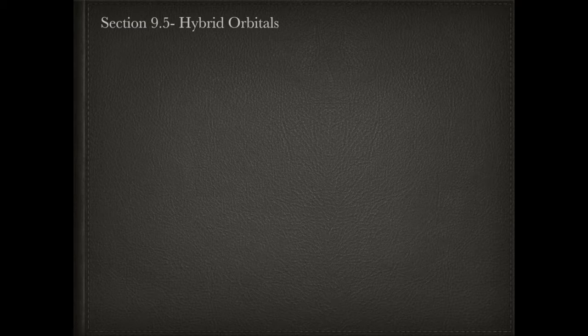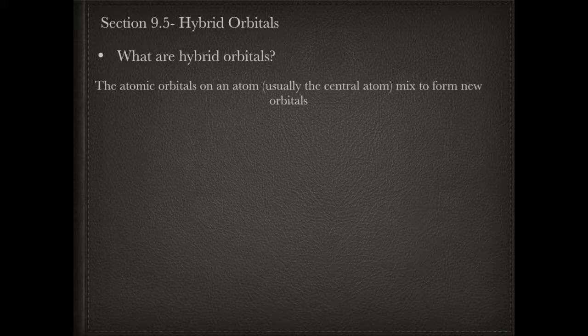In this lesson I'm going to take what you have learned about molecular geometries and electron domain geometries and expand it to include three new concepts. The first concept is hybrid orbitals. Hybrid orbitals allow us to understand how exactly the shapes we've seen — the molecular geometries and electron domain geometries — form. Hybrid orbitals are the atomic orbitals of an atom, normally the central atom, that mix to form new orbitals — these combinations of atomic orbitals.